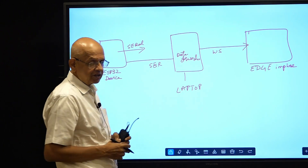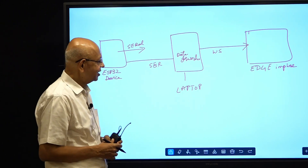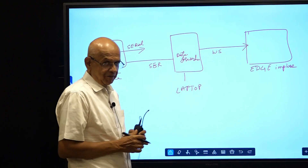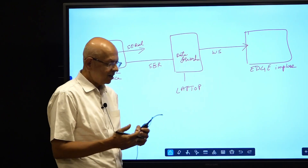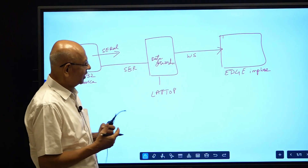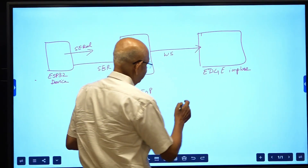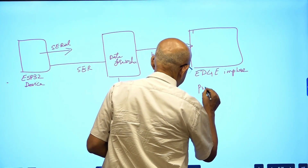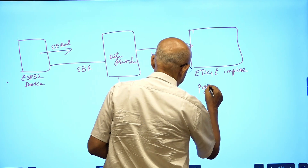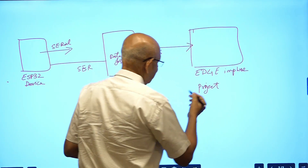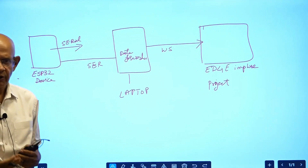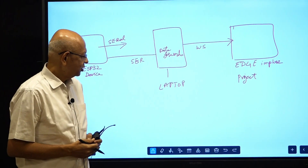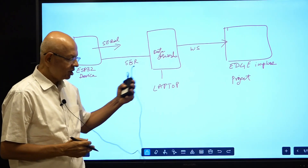To get the complete perspective of how the data forwarder works, let me describe what happens and then show you the screens. On the Edge Impulse side, we will have to create a project. To create a project, you will need your credentials — your username and password.